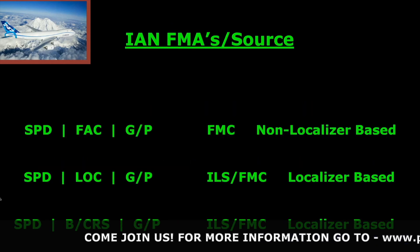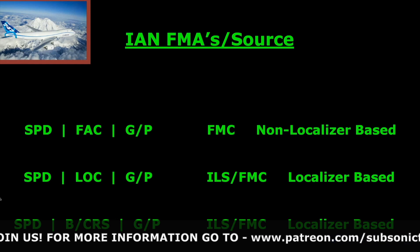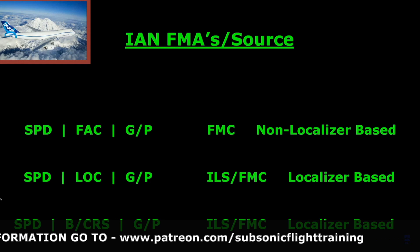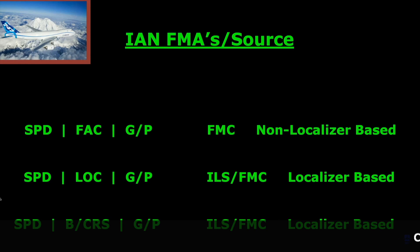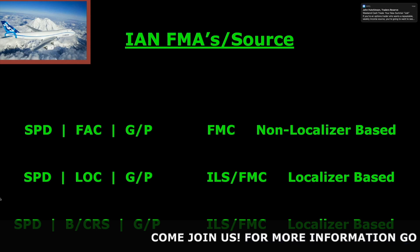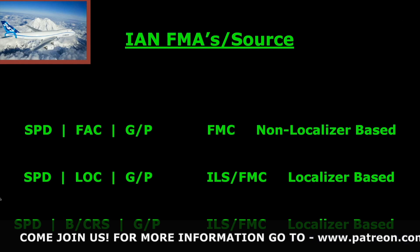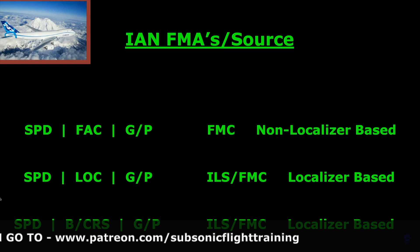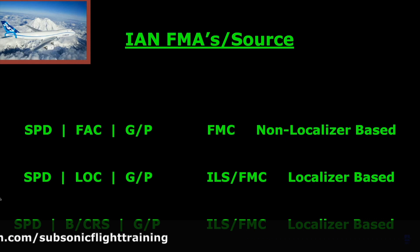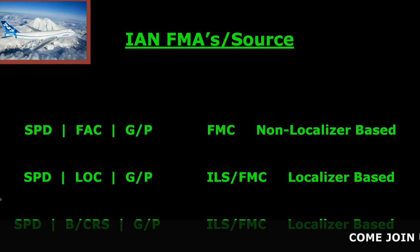These are the possible FMA combinations. For an FMC non-localizer based approach like a VOR approach, you would have speed for autothrottle, FAC for the lateral mode (final approach course), and GP for glide path. For a localizer-based approach, you'd have speed, localizer, and glide path. For a back course approach, you'd have speed, back course, and glide path. For a localizer-based ILS approach, you'll have both ILS and FMC as the source — the localizer comes from the ILS, but the glide path comes from the FMC. For a VOR or ADF approach, it's all FMC-based.